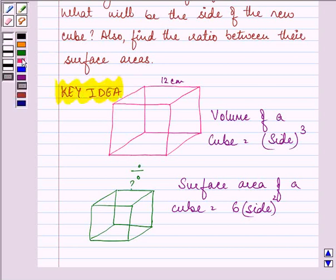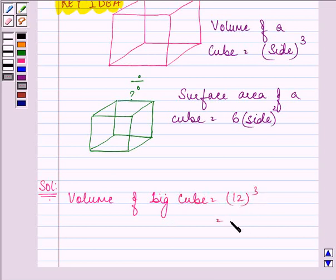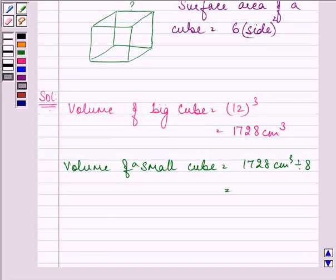Now after understanding the concept, we can easily proceed on with the solution. Let us find out the volume of the big cube. That is 12 cubed. So volume of a small cube will be 1728 cm³ divided by 8. It is equal to 216 cm³.